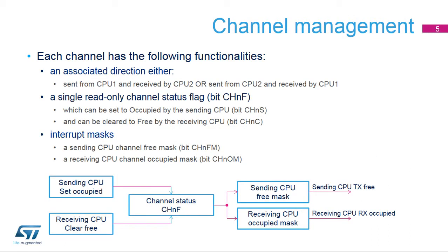A channel is associated with the direction from a sending CPU to a receiving CPU. The sending CPU can signal a channel to be occupied by setting the channel status to occupied using its Set Channel N Register Bit, or CHNS. If the receiving CPU has unmasked its channel-occupied interrupt in its Channel N Occupied Mask Register Bit, or CHNOM, an RX-occupied interrupt, or message available, is generated for the receiving CPU. The receiving CPU can signal a channel to be free by setting the channel status to free using its Clear Channel N Register Bit, or CHNC. If the sending CPU has unmasked its channel-free interrupt in its Channel N Free Mask Register Bit, or CHN-FM, a TX-free interrupt, or flow-on, is generated for the sending CPU.